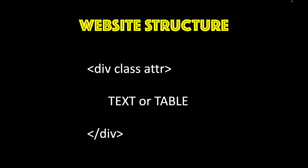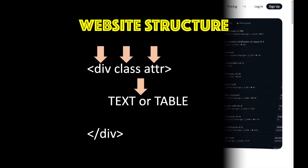Before we go into Web Scraping, let me give you a basic introduction on how websites are generally structured. Websites are essentially in HTML format. They have a high-level element called the tag, and the tag can have a class and an attribute. Under this tag, you can have various text information as well as tabular data.